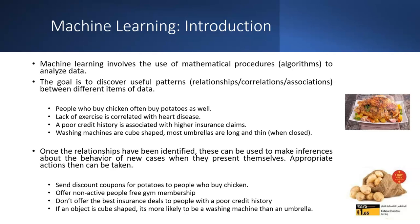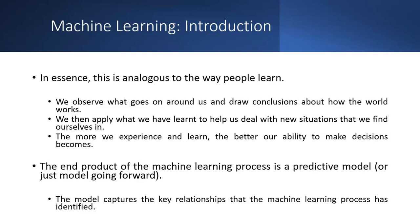Identified relationships can suggest appropriate actions — for example, send discount coupons for potatoes to people who often buy chicken; offer gym memberships to inactive people; don't offer the best insurance deals to people with poor credit history; if an object is cube-shaped, it's likely a washing machine. This is analogous to the way people learn — observe, draw conclusions, and apply to new data.